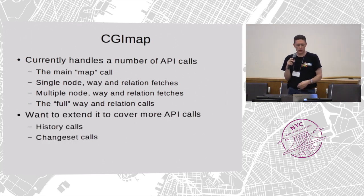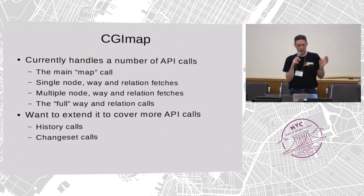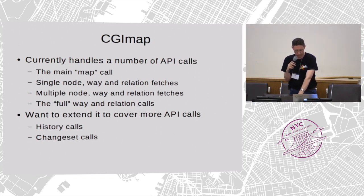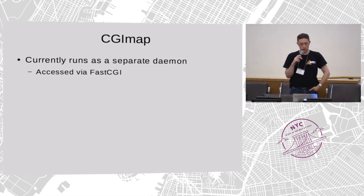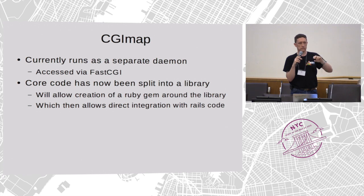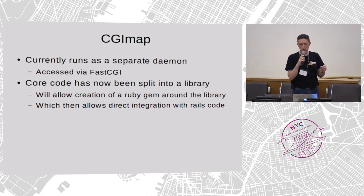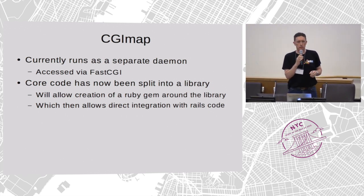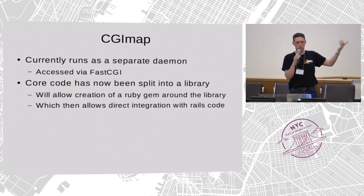We want to go further — ideally eventually CGI map will handle everything. The next targets are probably the history calls, which give you all the versions that have ever existed of a particular node, way, or relation; and also the changeset calls, which download the metadata for a changeset or the whole data for a changeset in OSMChange format. Currently this all runs as a separate daemon called via FastCGI on the backend machines. The core code has now been split into a library, so the daemon is just a wrapper around that library. The goal is now to write a gem that also sits around the library, allowing us to call directly into this code from the Rails code, so we can use the same code to implement the API in Rails as we use in CGI map — meaning we won't have to implement everything twice.